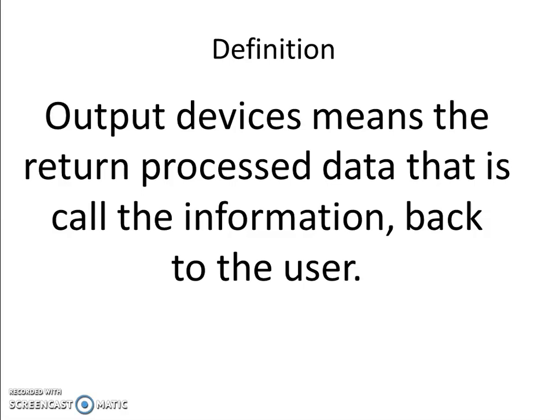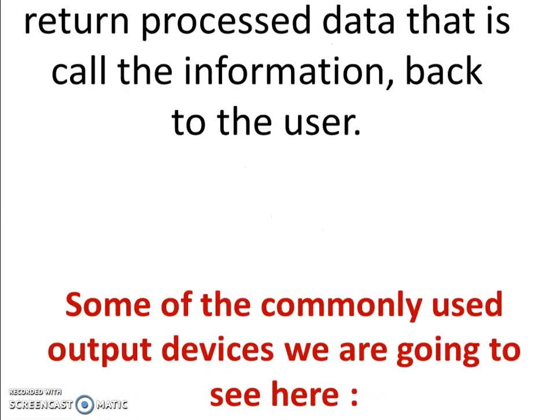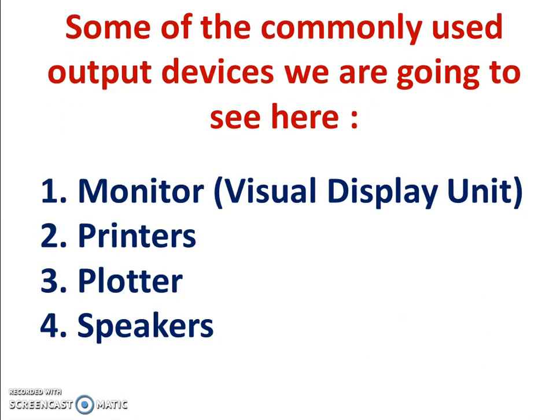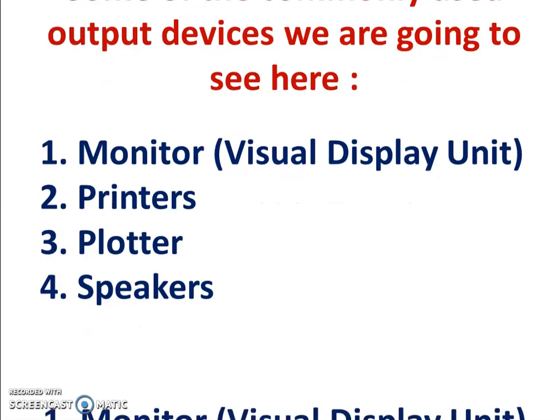Do you know what output device means? Output device means the processed data, that is called information, sent back to the user. Some of the commonly used output devices are: first, monitor; second, printer; third, plotter; and fourth, speaker.